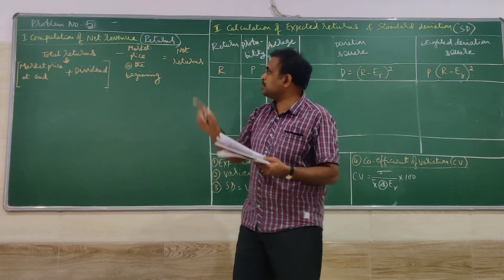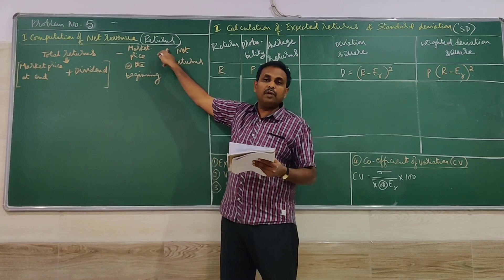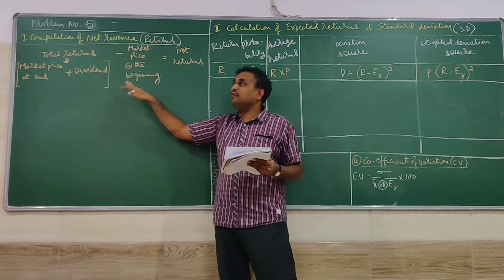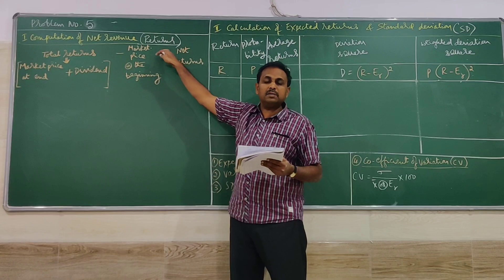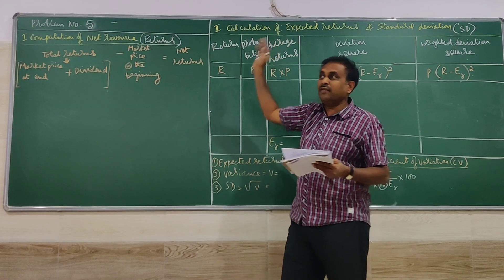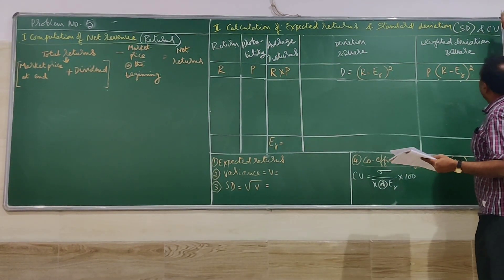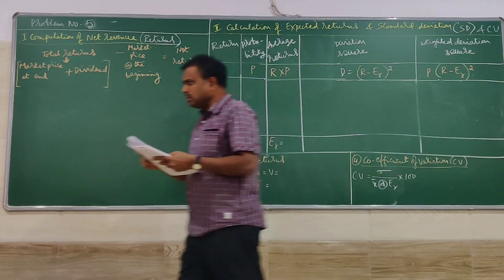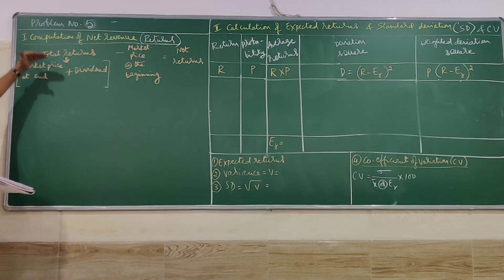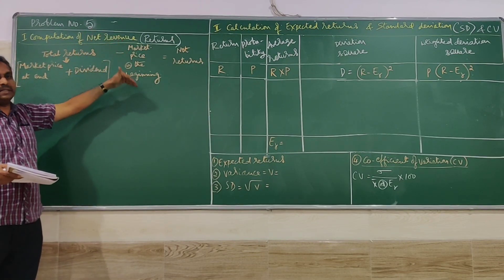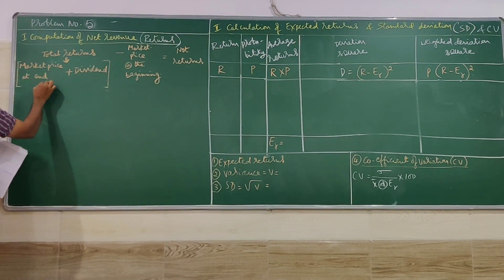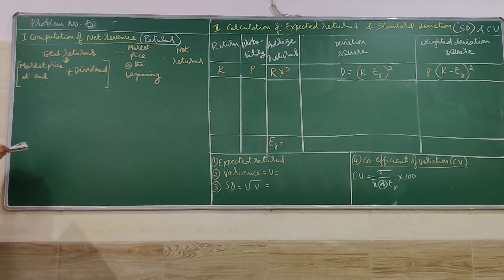In this problem we don't have the net returns directly — we have only the probabilities. So with the information available, we first need to calculate the returns, then go for the calculation of expected returns, standard deviation, and CV. The formula is: total returns minus market price at the beginning equals net returns, where total return equals market price at end of year plus dividend.